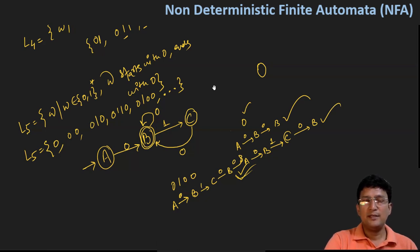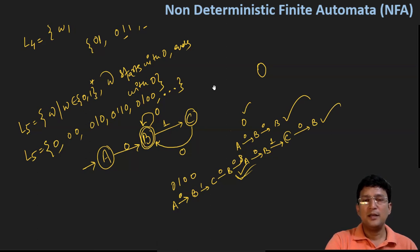I hope this makes sense. We are now confident that we can make any non-deterministic finite automata. In the next lecture, we will learn how to convert a given non-deterministic finite automata to a deterministic finite automata (DFA). Thanks for watching.